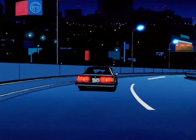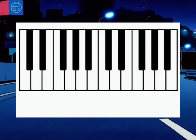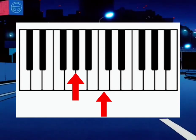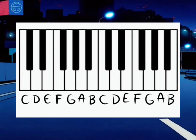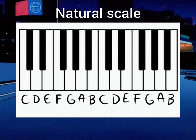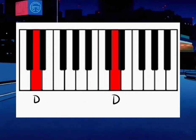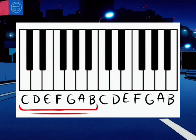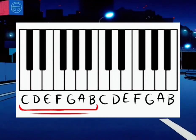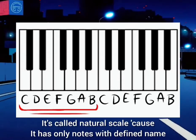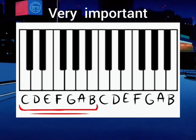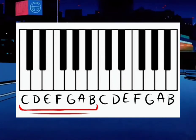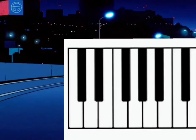Before we start playing, we need to know a few basics. Let's look at this piano — there are black and white keys. The white keys have defining names and together they form the natural scale, and it sounds like this. This scale is the one from which almost the entire musical structure emerged.